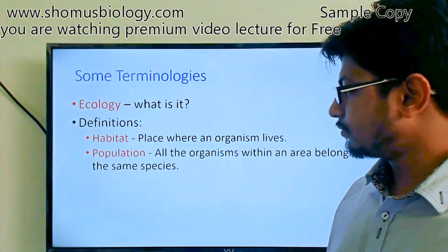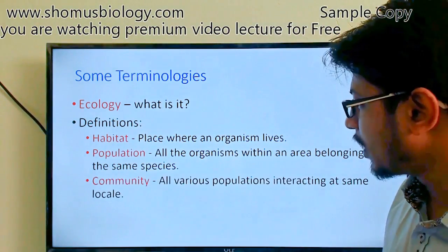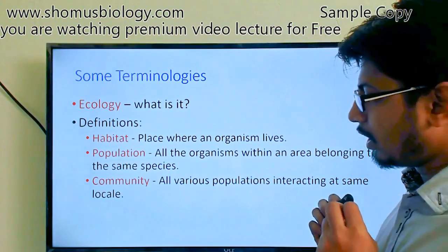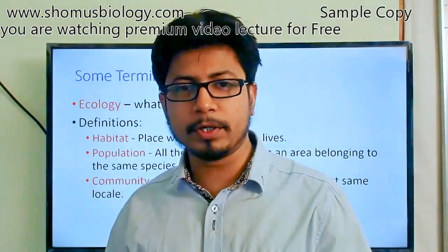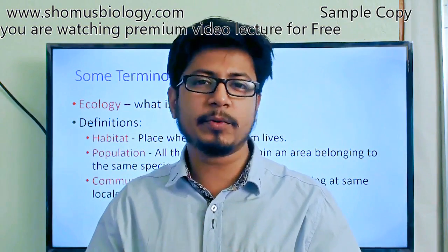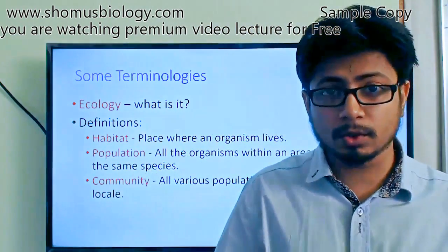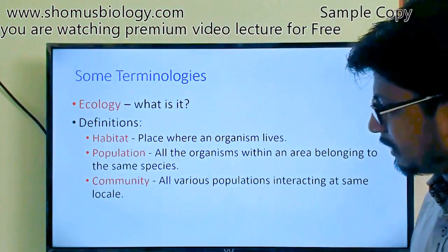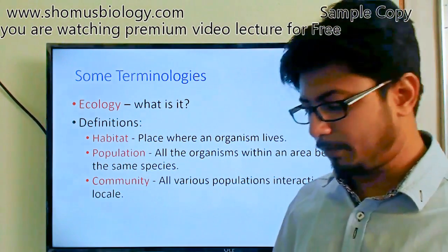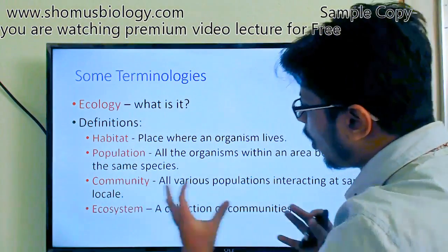A community consists of all various populations interacting in the same local area — all populations living together and linked with one another, where one population influences the growth of another. An ecosystem is a collection of all these communities together.